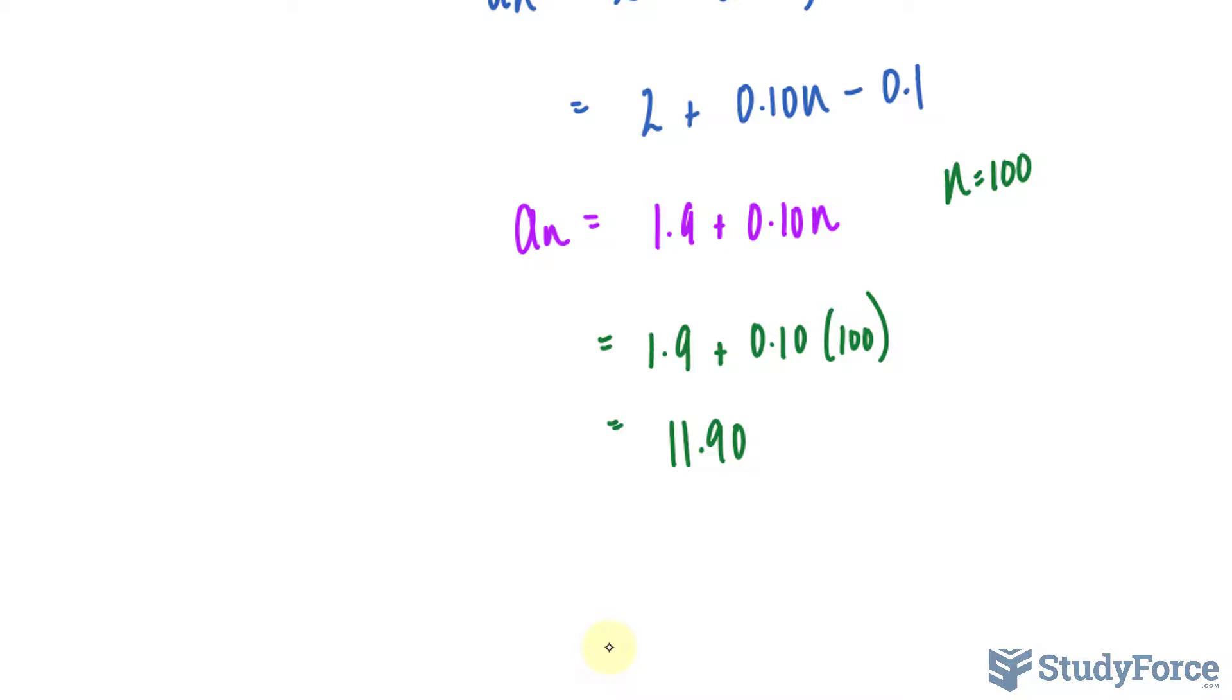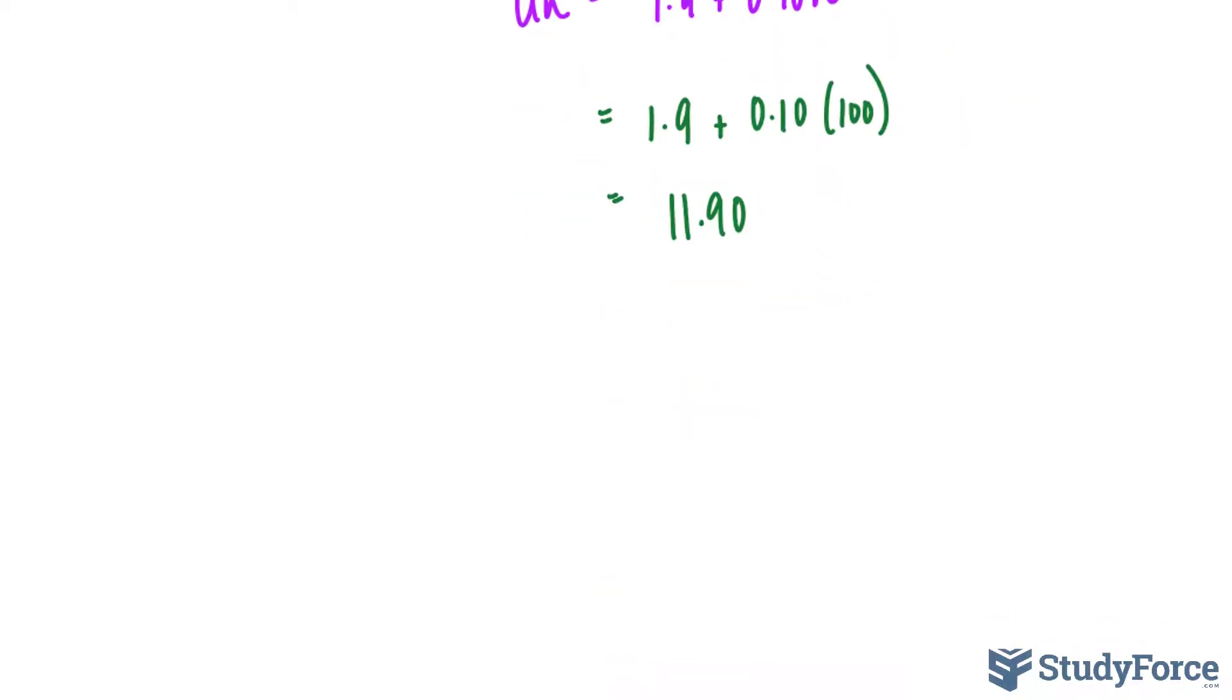This formula models a series, and it looks like this, where the sum at 100 is equal to n bracket a1 plus a100 over 2. So I have a number n of 100 bracket, what we started with, which was $2 plus what we ended with, which was 11.90 over 2.